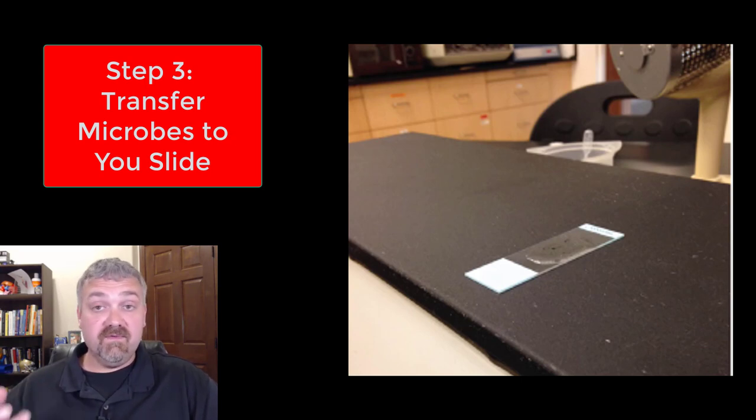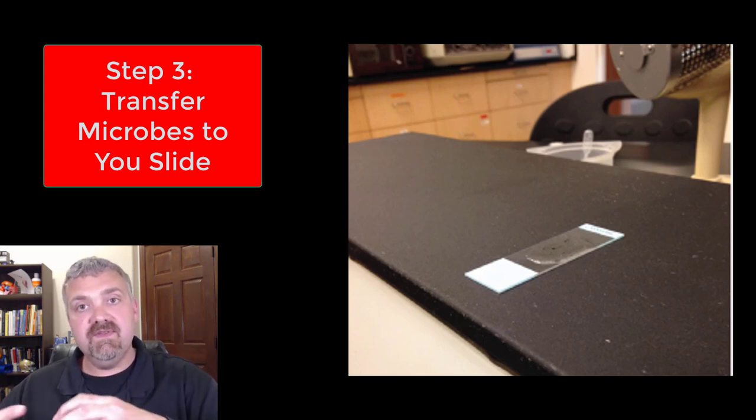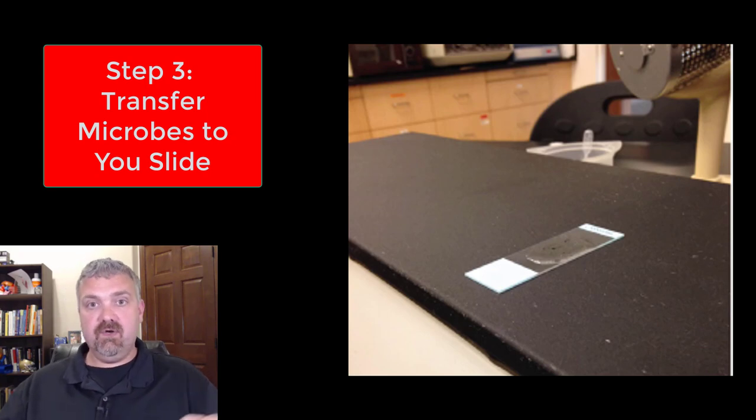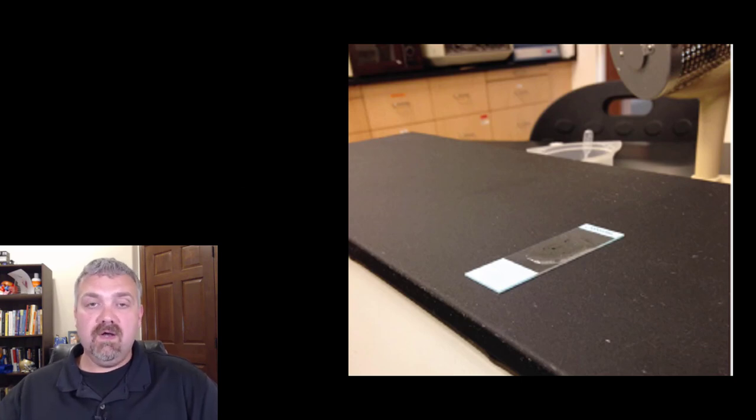If you're starting with solid organisms from a plate or a slant, then you're going to actually add two loopfuls of water first and then add a clump of the solid bacteria and break it up here. We've sterilized our loop, done our transfers, and now have two loopfuls of organisms on our slide. Make sure you spread it nice and thin. You want to make sure it's a thin preparation of bacteria.